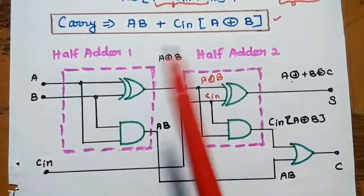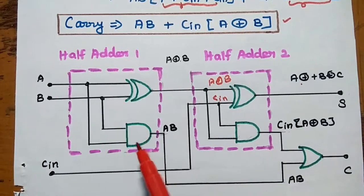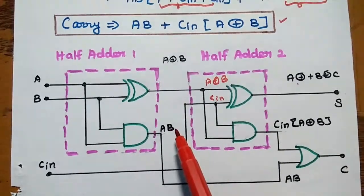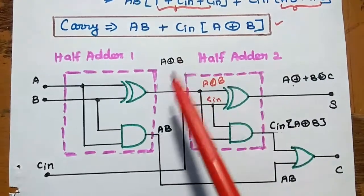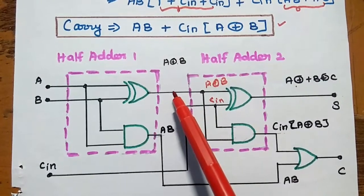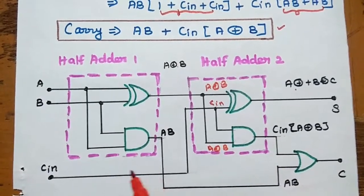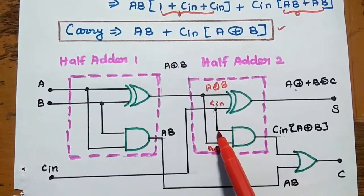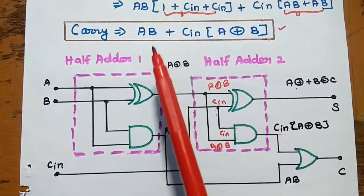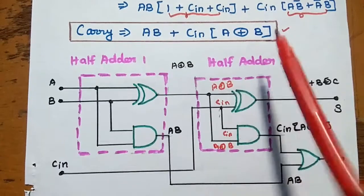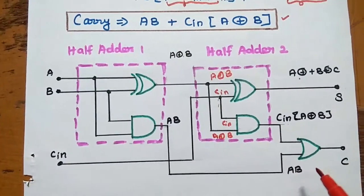Next we are going to obtain carry. For carry, we multiply A and B — both are given to an AND gate to obtain AB. Then we multiply Cin with A XOR B: the output of the first XOR gate (A XOR B) and Cin are both given as inputs to another AND gate, giving us Cin(A XOR B). So carry equals AB + Cin(A XOR B). The outputs of these two AND gates are added together using one OR gate.